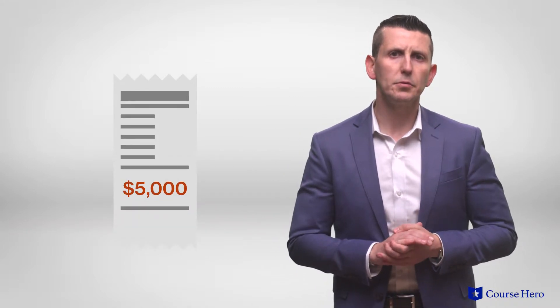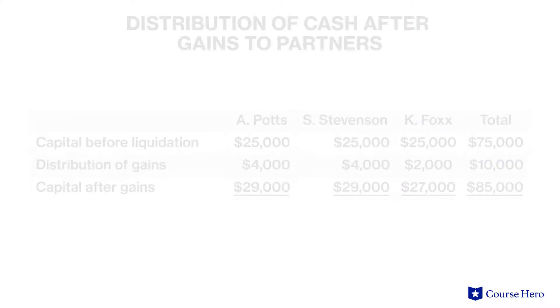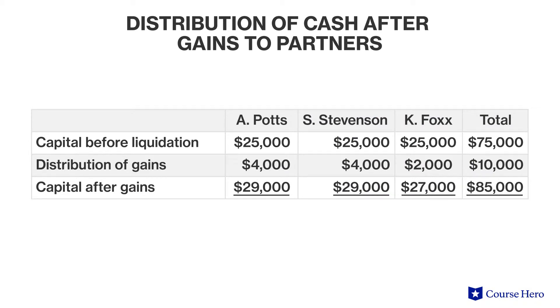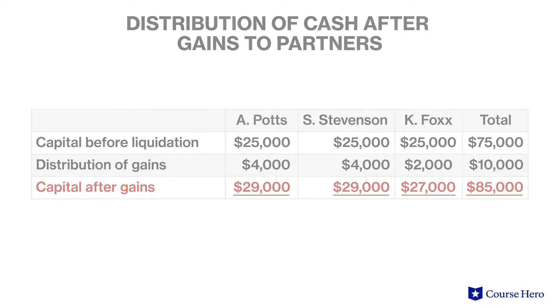Step three involves the payment of liabilities — five thousand dollars. This leaves eighty-five thousand dollars of cash: the beginning fifteen thousand dollars plus the seventy-five thousand dollars from the sale of assets, minus the five thousand dollars used to pay off debts. Step four is the distribution to the partners: the remaining eighty-five thousand dollars of cash is distributed according to each partner's capital account balance.